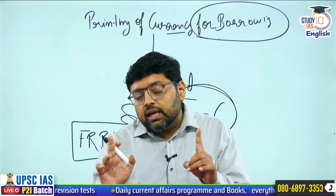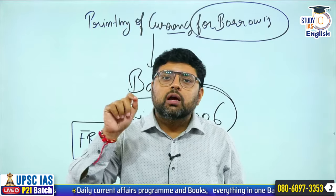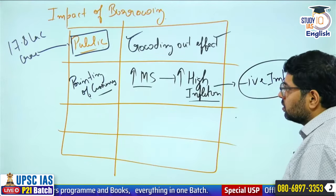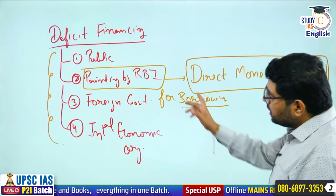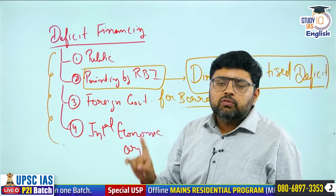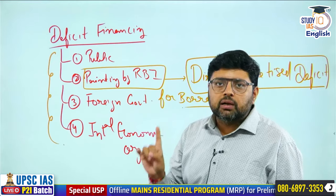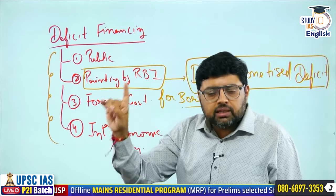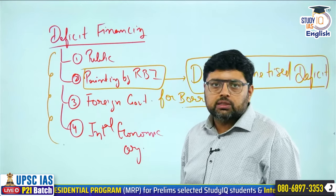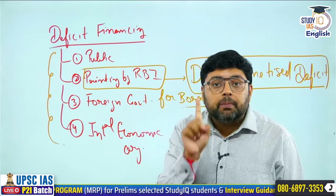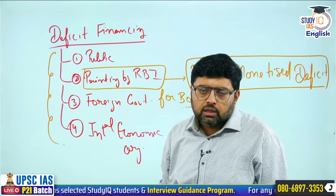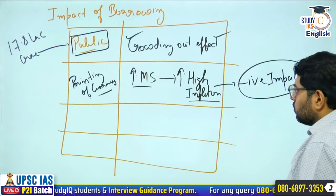If the question is general, deficit financing includes all four sources. But in the context of India, only three options are available: public, foreign government, and international economic organizations. Printing of currency for borrowing purposes is banned since 2006 under the FRBM Act. This is what you must remember for your exam.